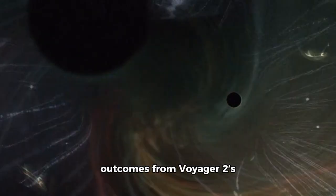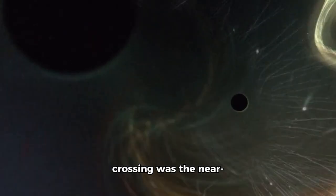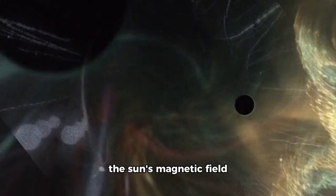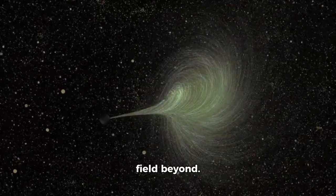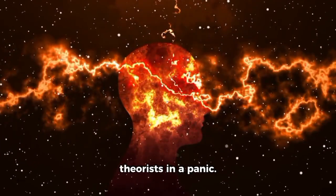One of the most surprising outcomes from Voyager 2's crossing was the near-perfect symmetry between the sun's magnetic field and the galactic magnetic field beyond. This discovery left theorists in a panic.